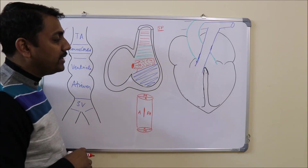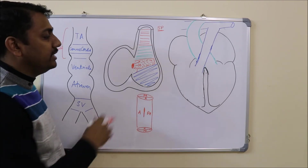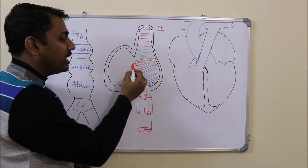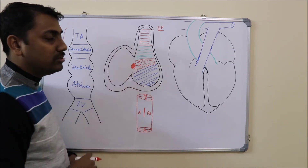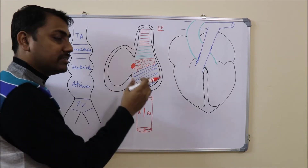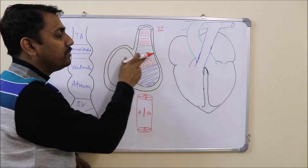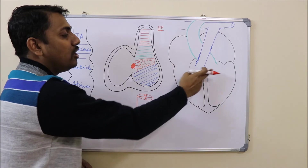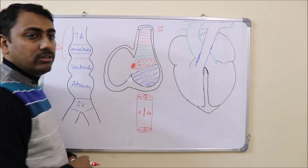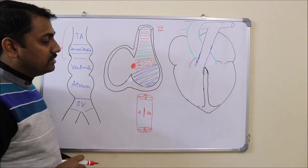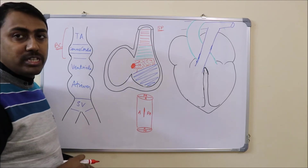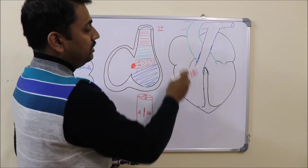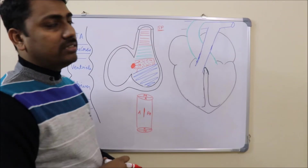The endocardial cushion completes the interventricular septum by forming the membranous part. The membranous part is formed by the anterior proliferation of the endocardial cushion plus a small part of the bulbar septum, because it was dividing both the outflow tracts. Remember this fact when we discuss the embryological basis of the heart defect.